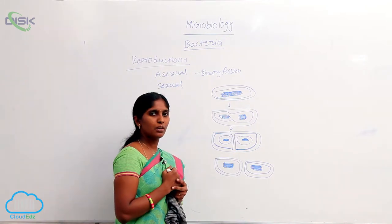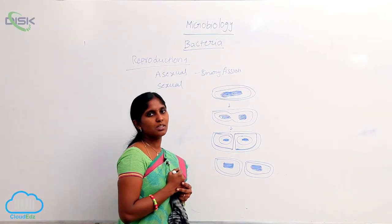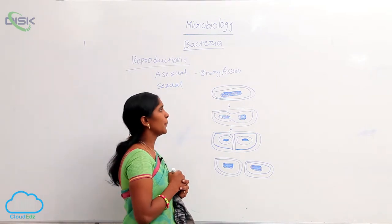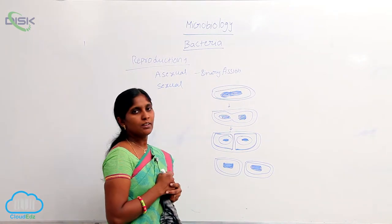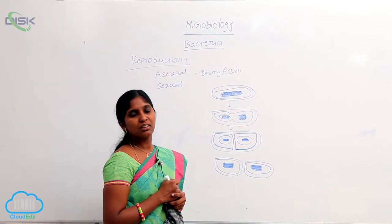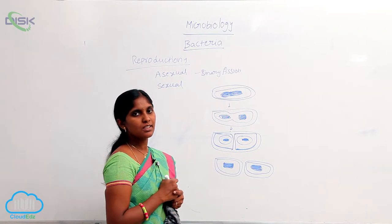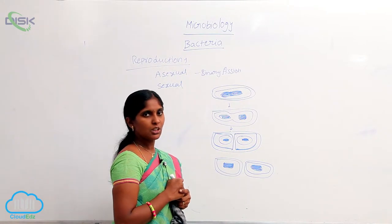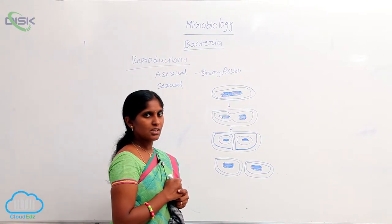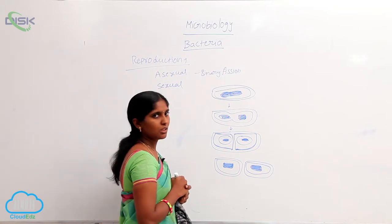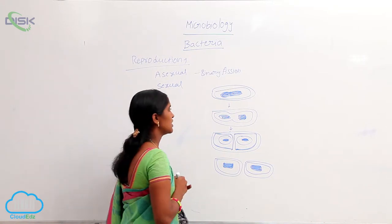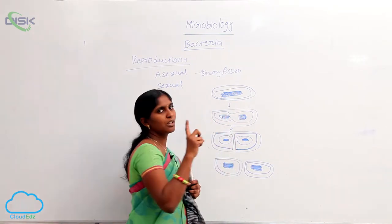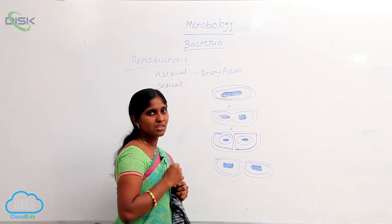First, it absorbs more nutrients and accumulates them inside its body. Then the DNA is replicated into two daughter DNAs. After the two daughter DNAs are produced from the mesosome side, two nicks are produced inside.